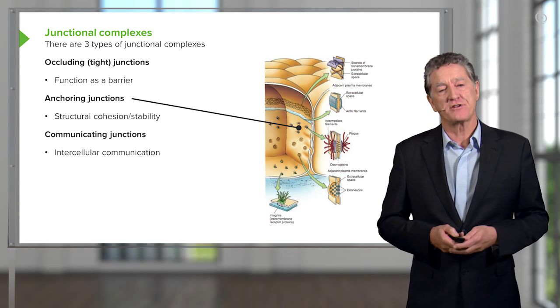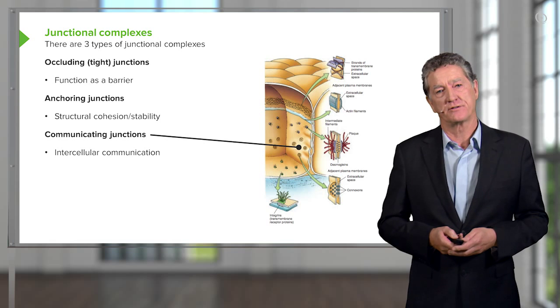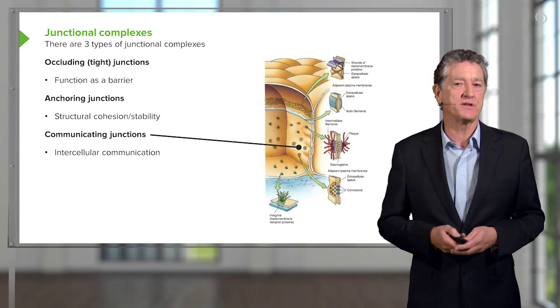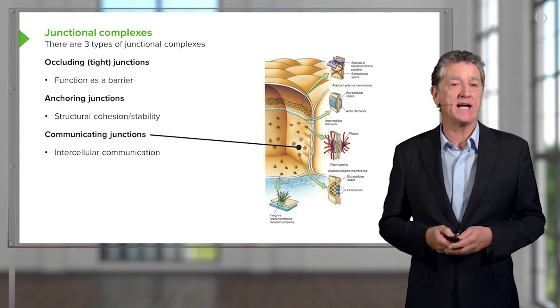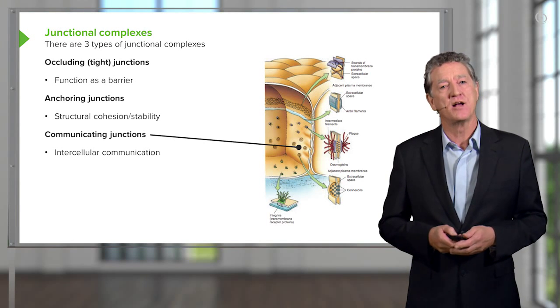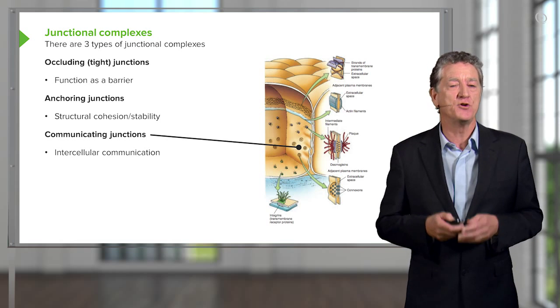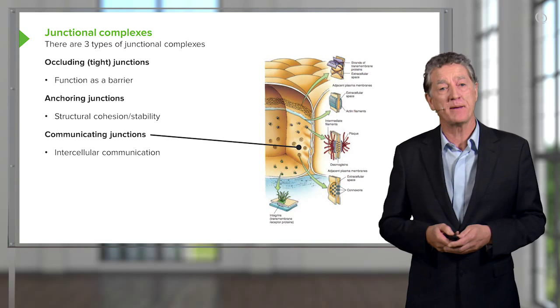And the remaining type of junction is the communicating junction or a gap junction. These consist of proteins, connexons, which enable things to pass between the cells. Things like anions, nutrients and various other chemical signals.